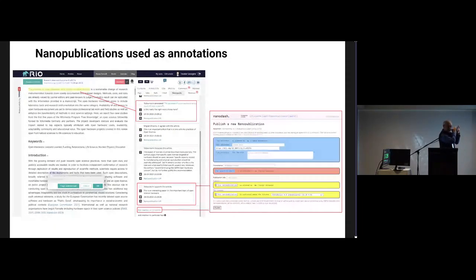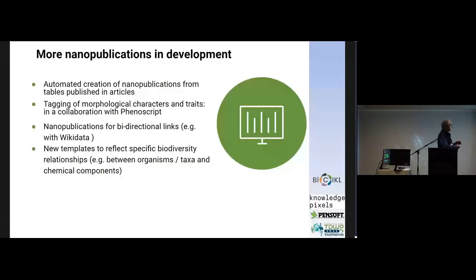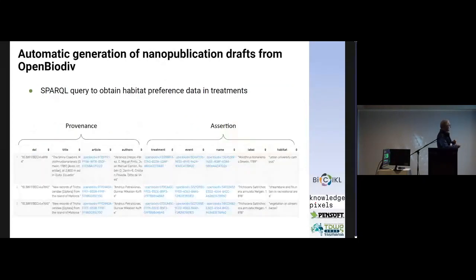The DOI of the article and your name are filled in automatically. You only need to say whether you support, disagree, or argue with the article — those categories are available from the CiTO ontology.